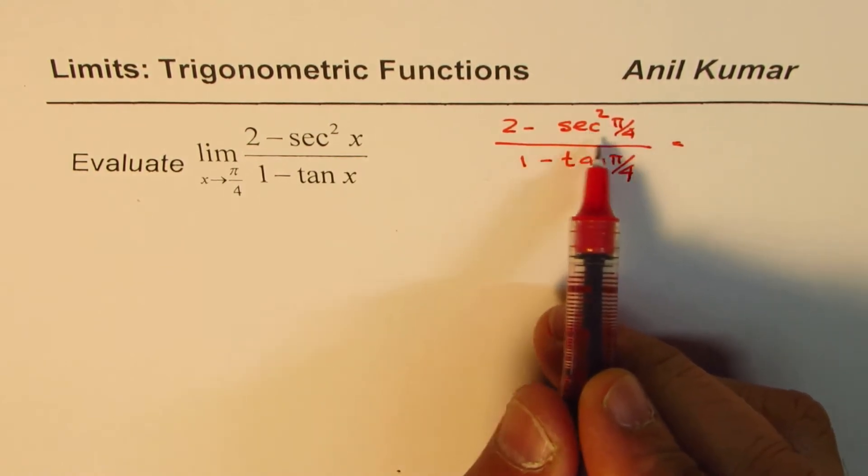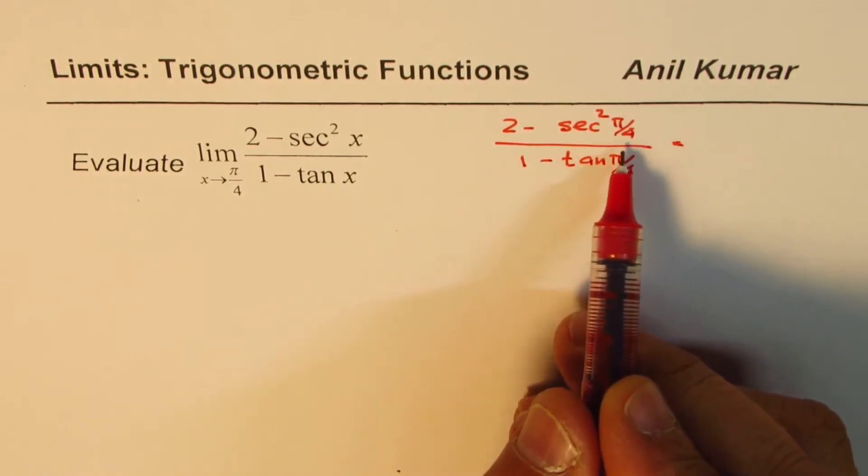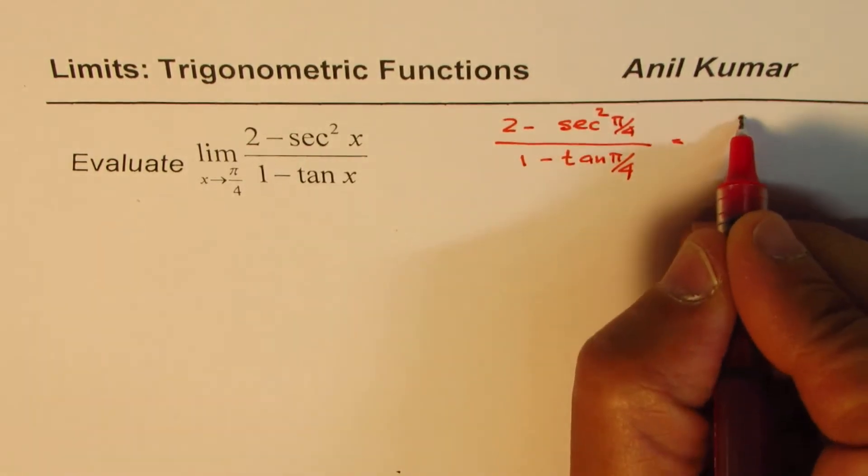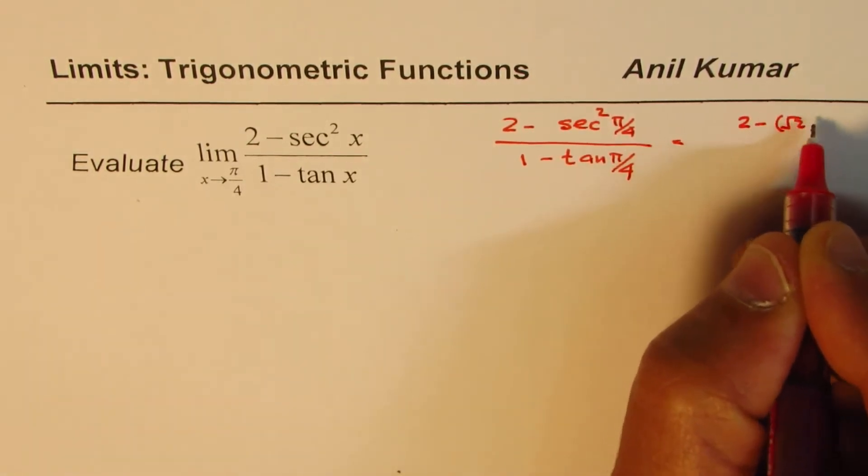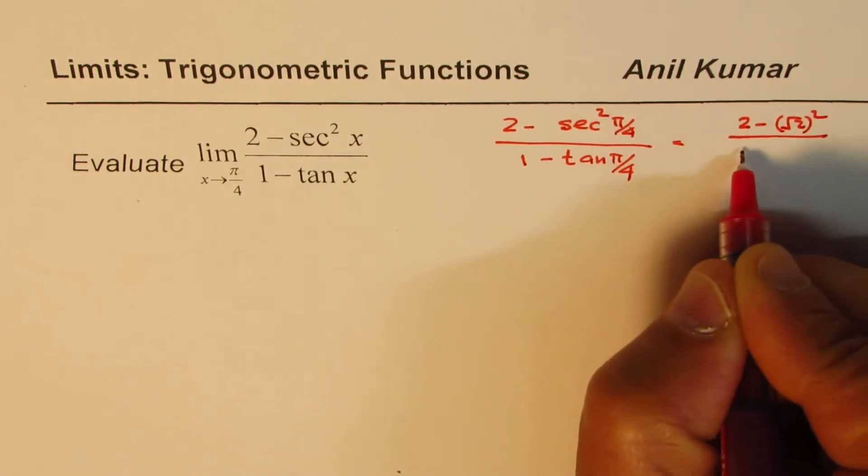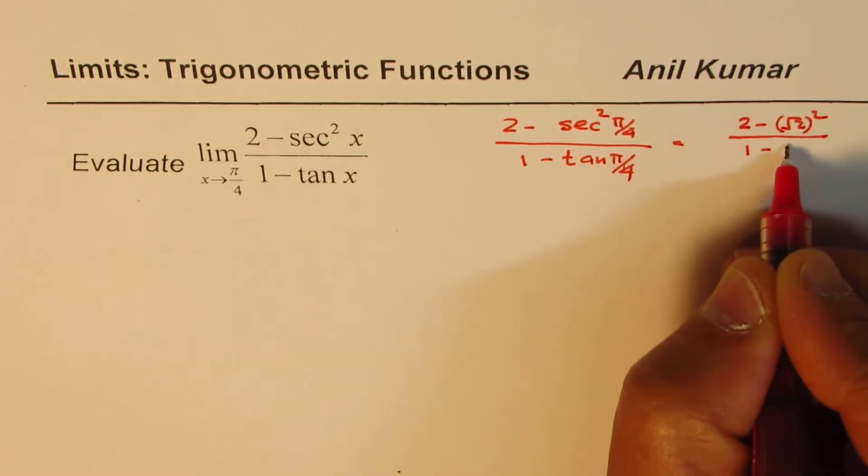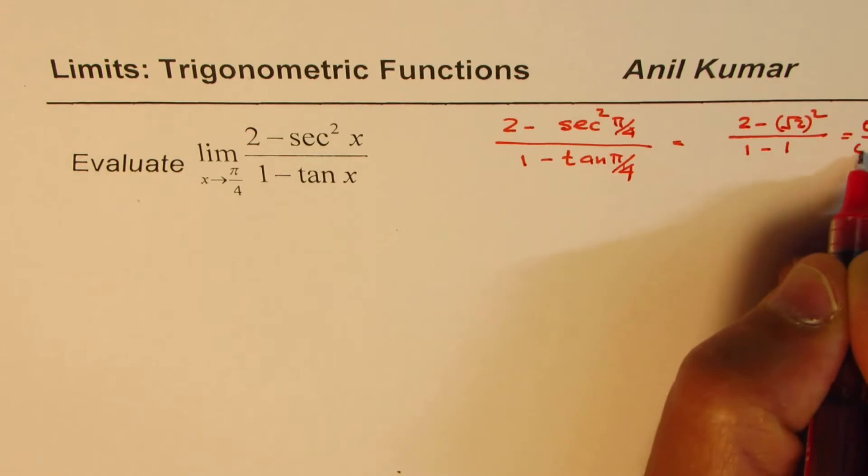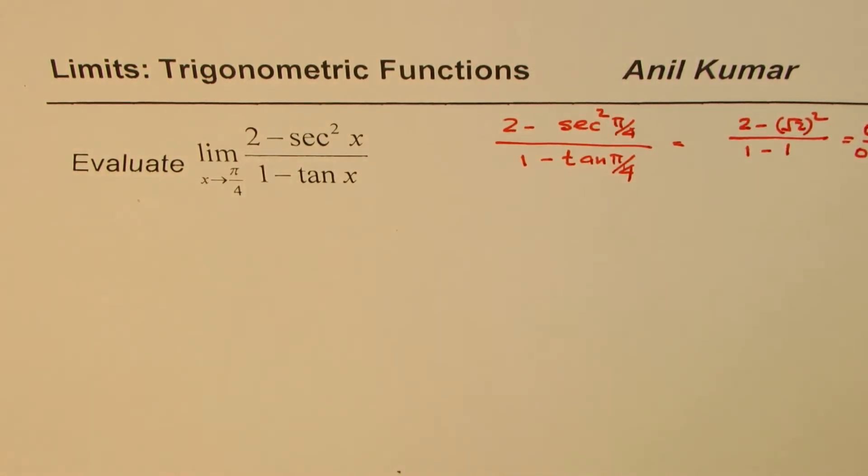So sec²(π/4) will be (√2)². You could write this as (2 - (√2)²) / (1 - 1). So we get 0/0. This is an indeterminate form.